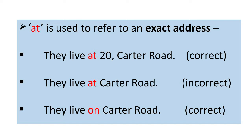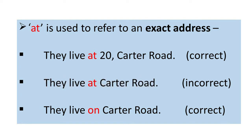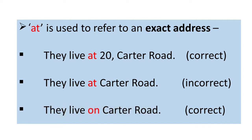The next sentence says: They live at Carter Road. We use the preposition 'at' with the exact address. Here, the preposition 'at' is used to tell the position somewhere on a surface, which is Carter Road here. So this sentence is correct.